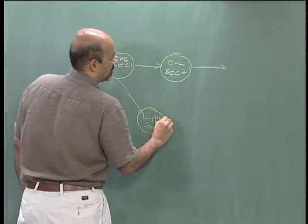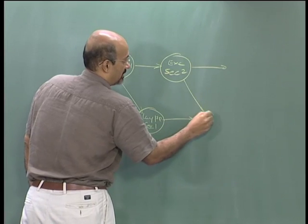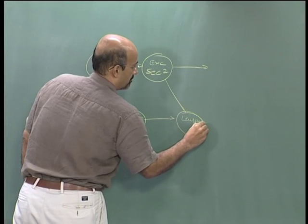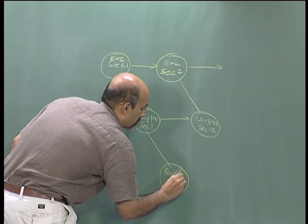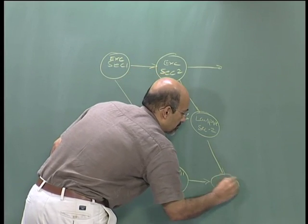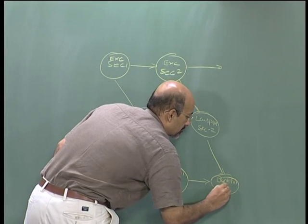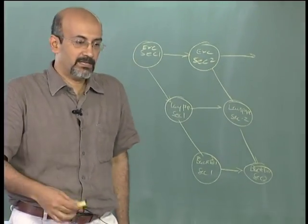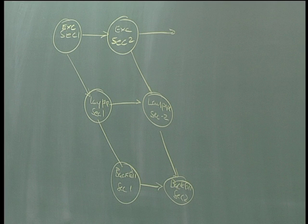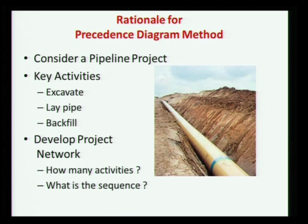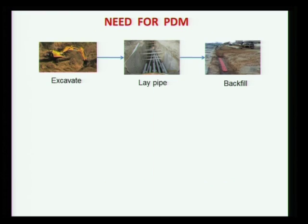You would have lay pipe section 2, then backfill section 1, and so on. So for just two sections we now have six activities, and if it is a very large project, hundreds of activities for a section. In order to address this problem, is there any other way you can think of? With activity on node or activity on arrow, where we only had a finish-start relationship, this was the only option. What precedence diagramming does is try to overcome this with different kinds of options.